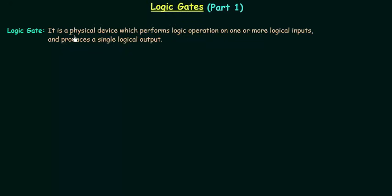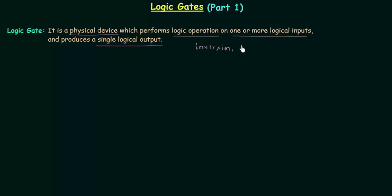A logic gate is a physical device and it performs logic operations on one or more logical inputs and produces a single logical output. The logic operations include inversion, logical multiplication, logical sum, etc. We can perform them by using logic gates, and we can have one or more logical inputs.